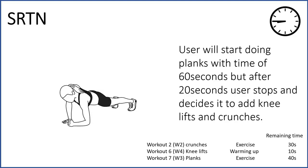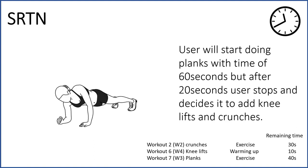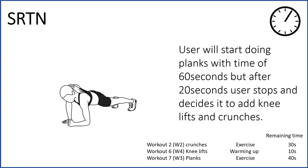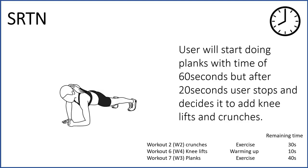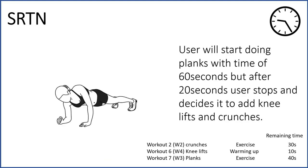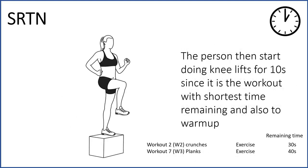At this point, the remaining time of planks is 40 seconds, and the two newly added workouts are crunches with 30 seconds and knee lifts with 10 seconds. The person will then start doing knee lifts for 10 seconds since it is the workout with the shortest remaining time, and it also serves as a warm up.